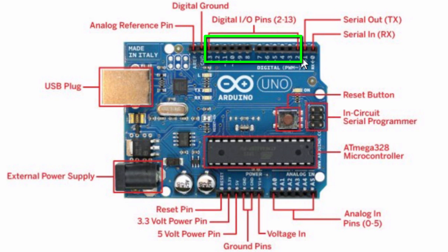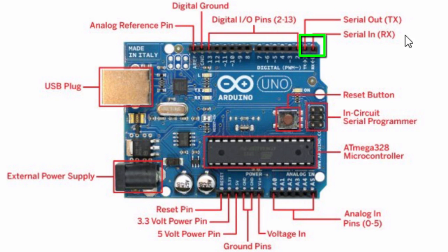These are the digital input/output pins. These pins can be either input or output: input pins are used to read information from sensors, while output pins are used to control actuators. You'll specify the direction — whether it's going to be an input or output — in the sketch. By the way, the programming code for Arduino is called a sketch. Digital input can only read one of two values, and digital output can only output one of two values, either high or low. This is the serial output and this is the serial input pin.